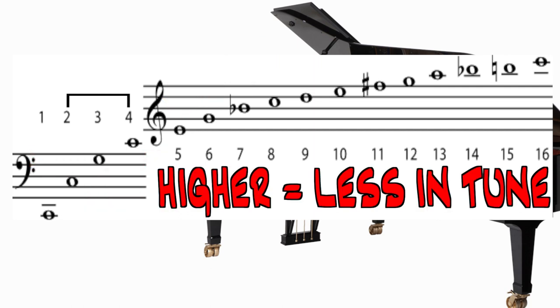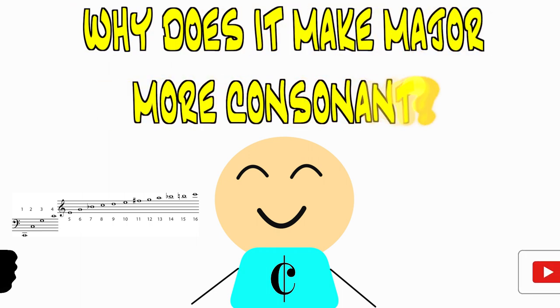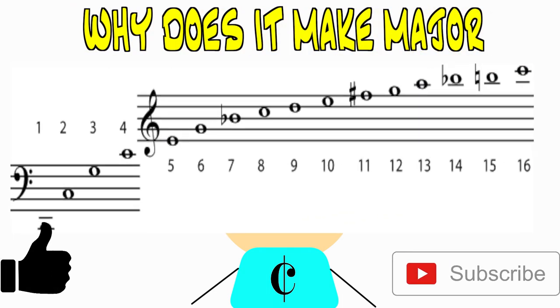As you go higher in the harmonic series, these frequencies are less in tune with their western equivalents. Now that you have a decent understanding of the harmonic series, why does it make major inherently more consonant? Let's refer to the relationship between harmonics five and six.